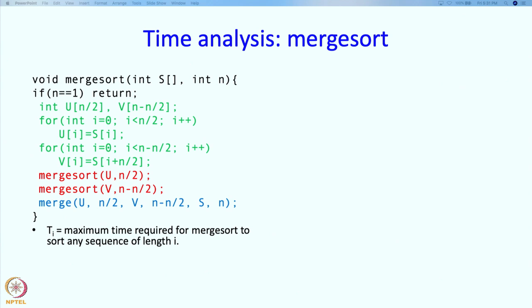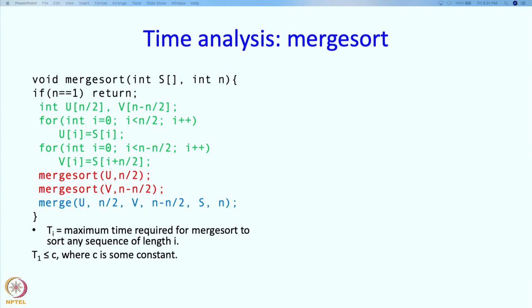In fact, this is not just a single unknown. I am defining several unknowns at the same time, an unknown for every value of i. So we can say something about T_1. What is T_1? The time required for merge sort to sort a sequence of length 1. Well, that is very easy. At this point itself we are going to return, so it will take some fixed amount of time, let us say it will take some time c. So I could write T_1 equal to c, but since everything else is going to be less than, I will write this also as less than or equal to.